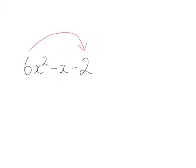So we get minus 12. Now, we need to find two numbers that multiply to give minus 12 and add to give minus 1, because it's a hidden 1 in front of the x.